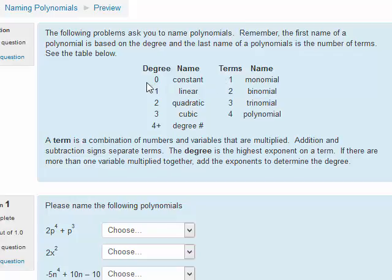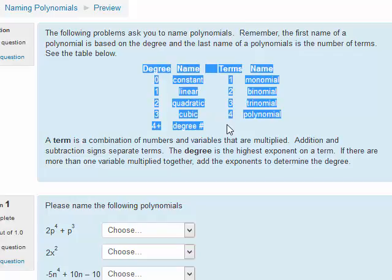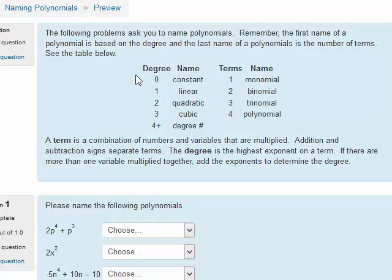We can see a couple of names here for degree and number of terms. If it's degree 0, it's a constant. Those are things like the number 5, negative 2, 8. Something without a variable is a constant.